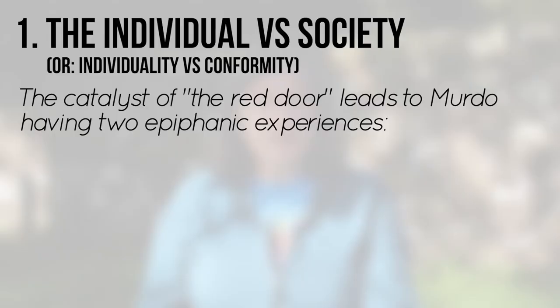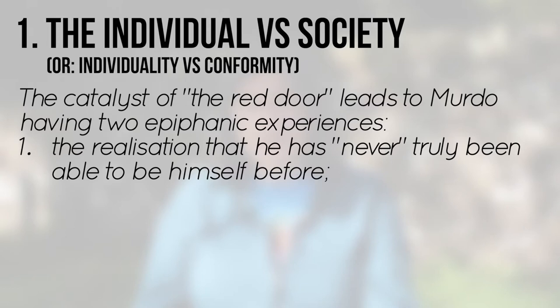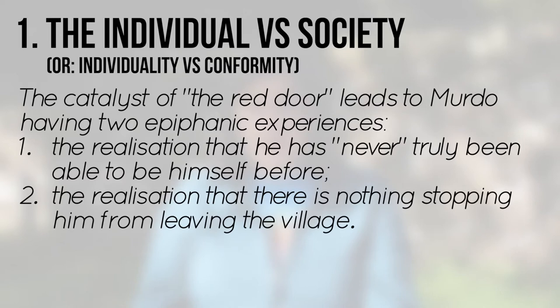He explores how the catalyst of the Red Door, with its suggestion of a new exciting future, leads to Murdo having not just one but two epiphanic experiences. Firstly, the realisation that he has never truly been able to be himself before. Secondly, the realisation that there is actually nothing stopping him from leaving the village.